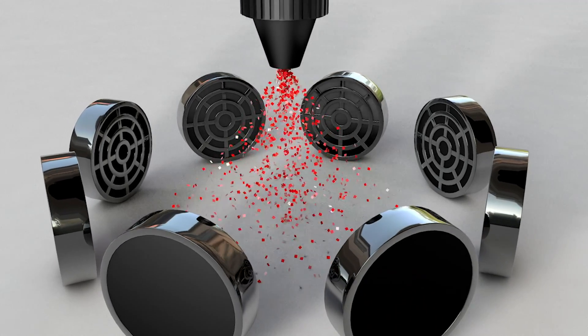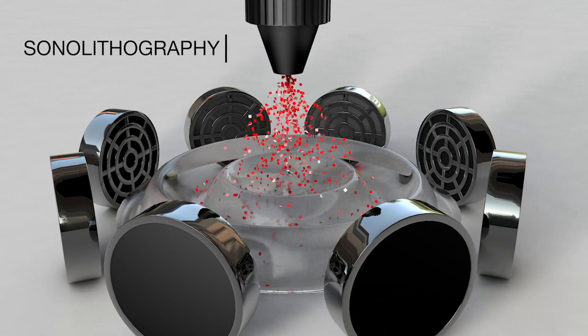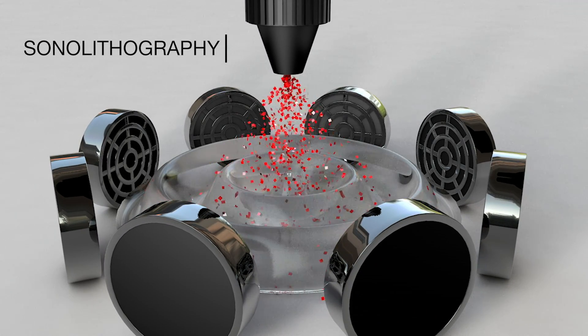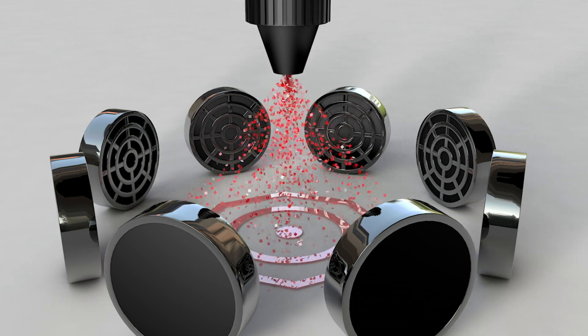Sonolithography uses ultrasonic standing waves to manipulate microscale droplets and particles in air and pattern them onto a surface.